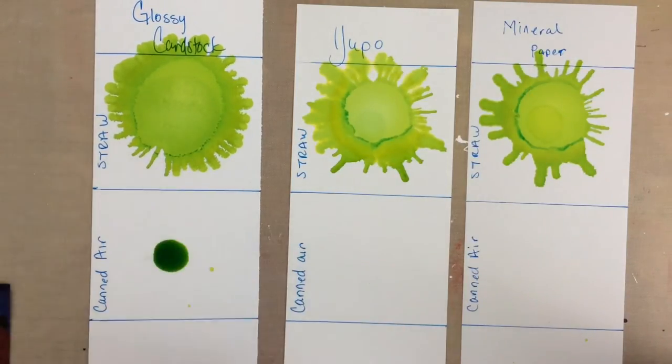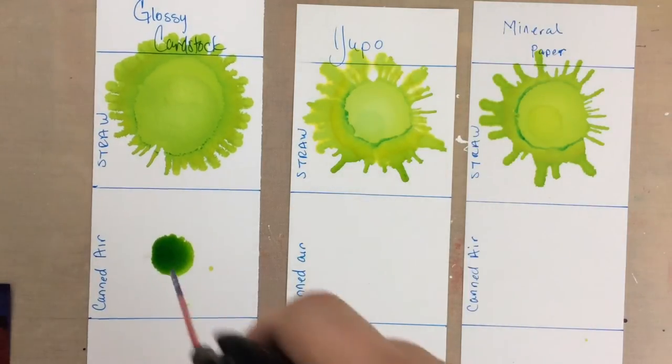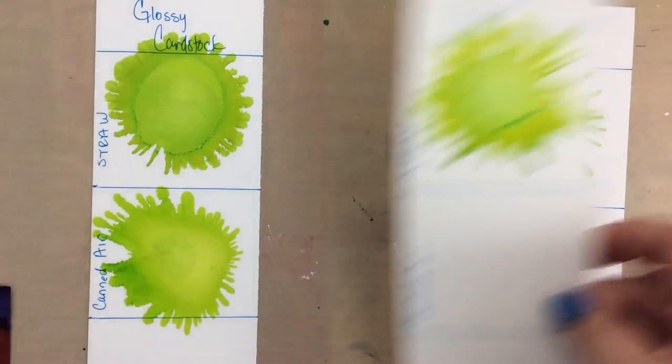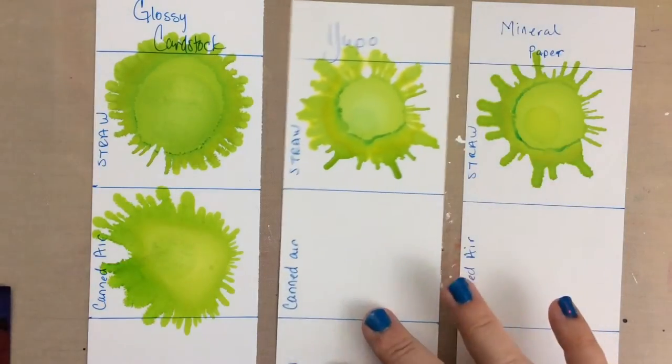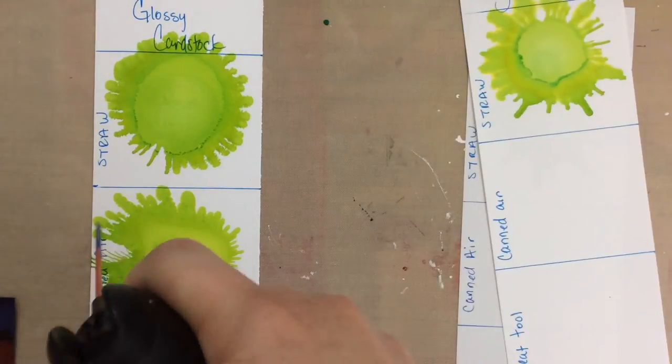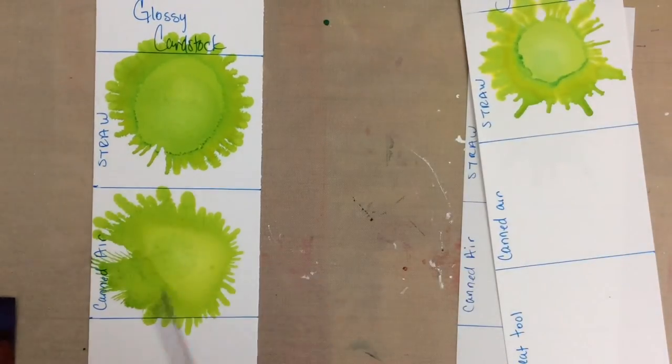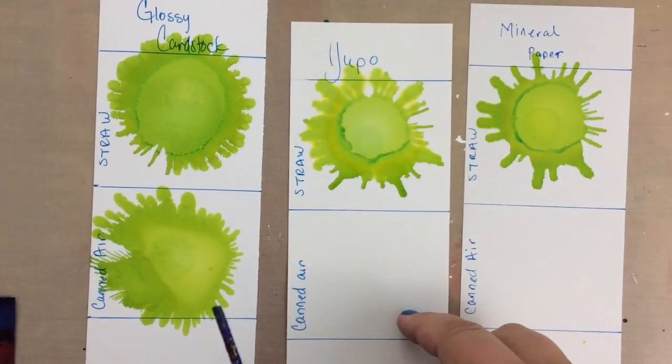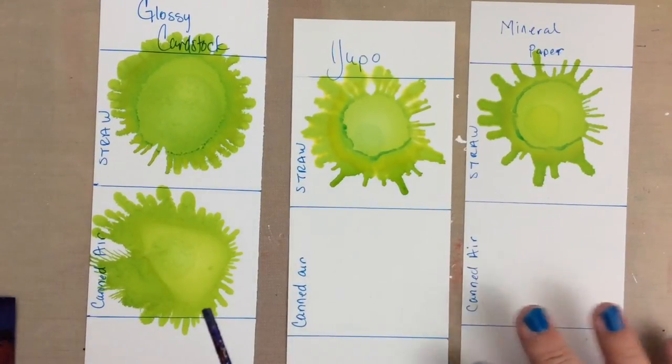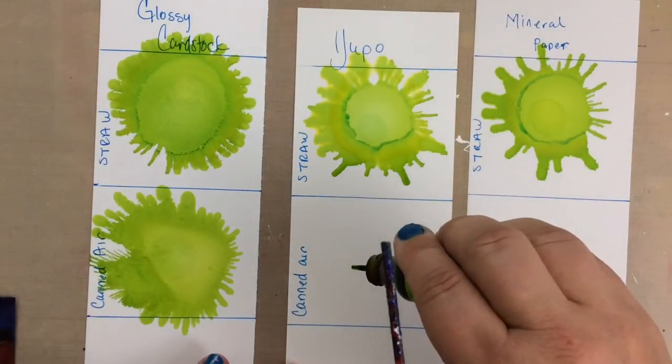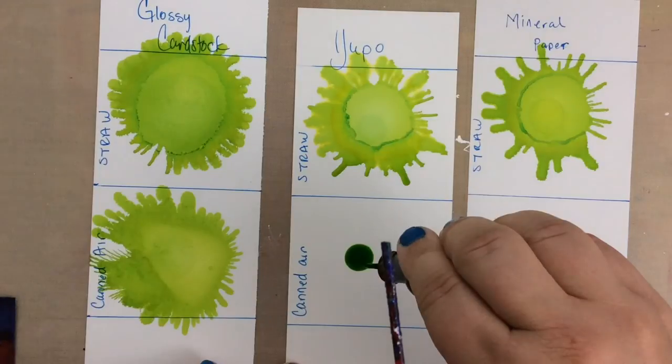On the glossy, there we go. I didn't wait very long. If I had waited a little bit longer it would spread out more. I mean, you can hit it with more lots of air if you want to. See, I got some very tiny tendrils in this case. And you see it blew my paper away, I did not tape it down. All right, here we go.